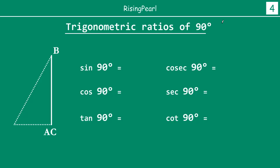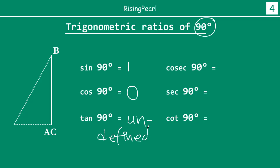So friends, we have found all 6 trigonometric ratios for 90 degrees. Let's quickly recap: sin 90° = 1, cos 90° = 0, tan 90° = undefined or not defined, cosec 90° = 1, sec 90° = undefined, and cot 90° = 0.